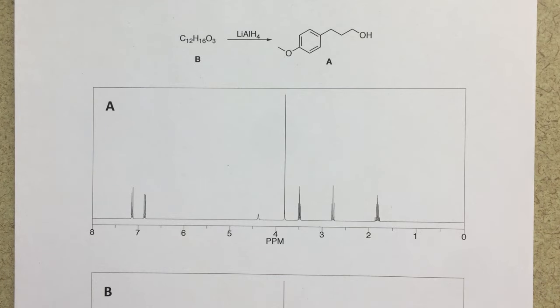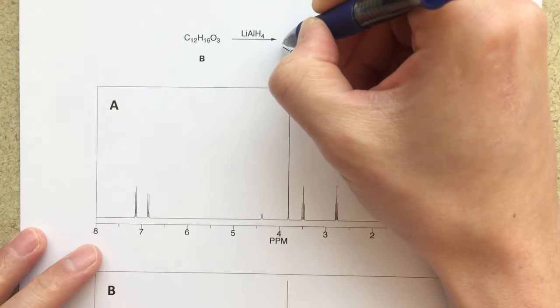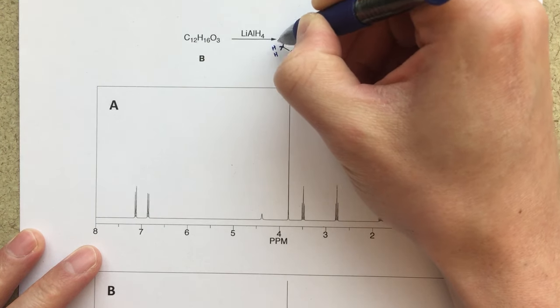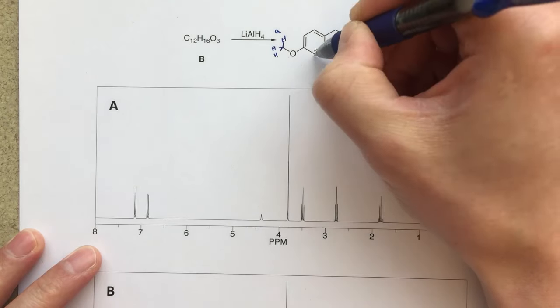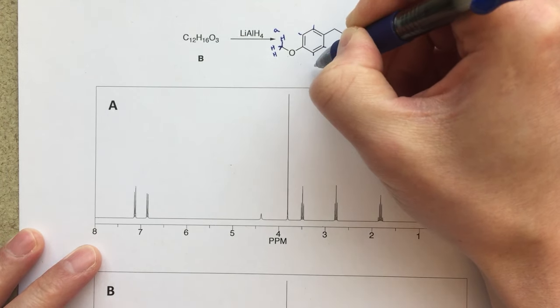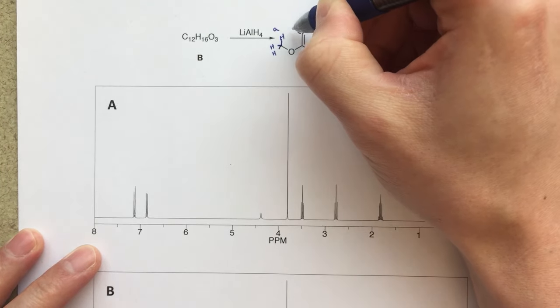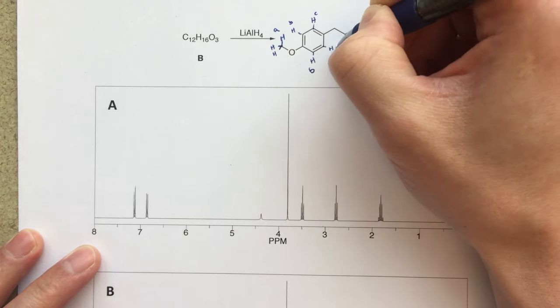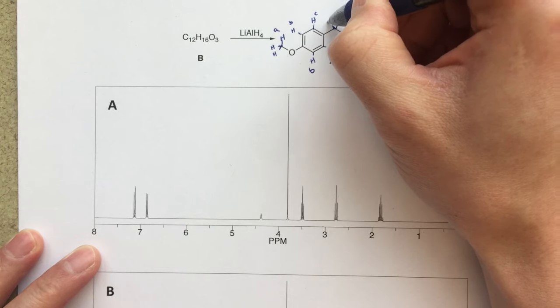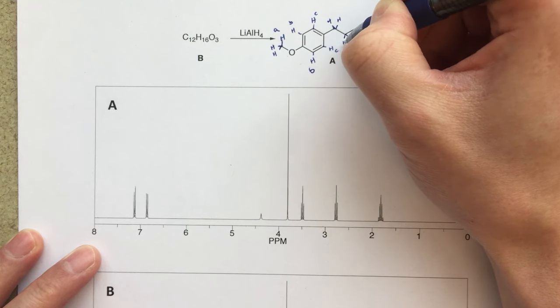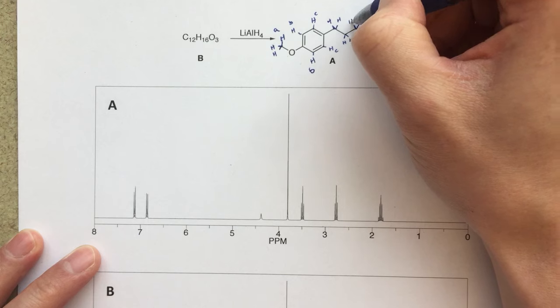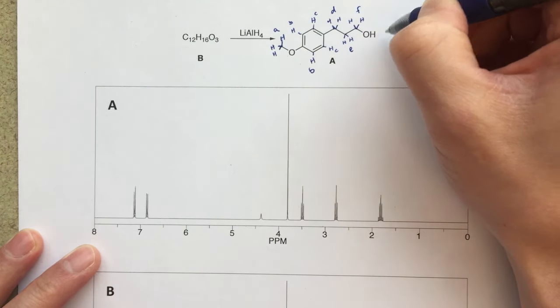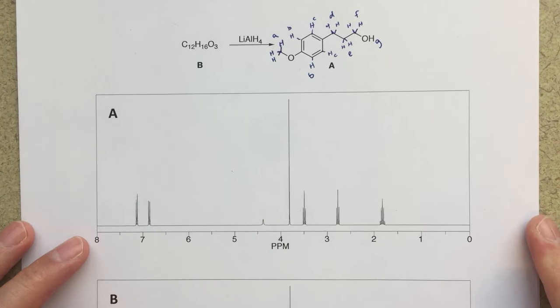The first thing that I'm going to look at is really just labeling all of my different protons. So we will label these three protons here, we'll call those A, then I'm going to have protons on this aromatic ring, so we'll draw those in, we'll call these B, we'll call these C. Then in my chain, I'm going to have these methylene linkers, so I've got three of those, and we'll call these D, E, and F, and then obviously our OH proton, we can call that one G.